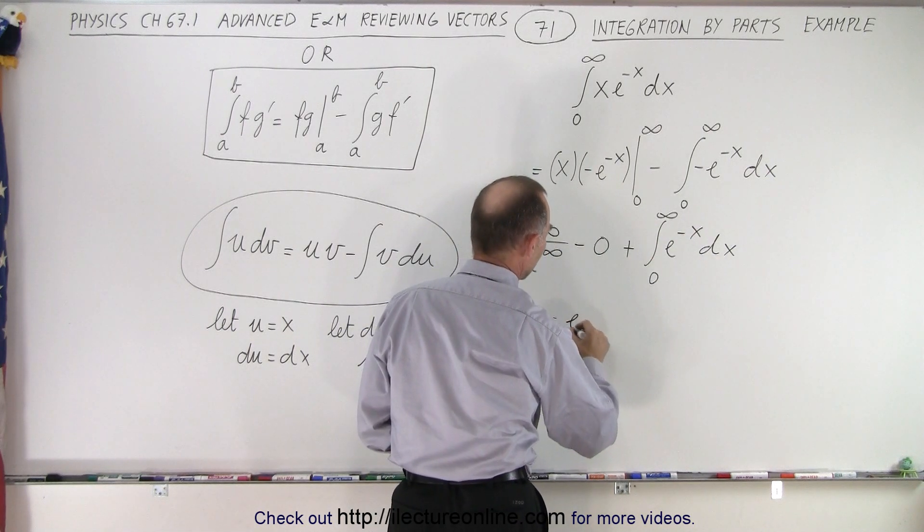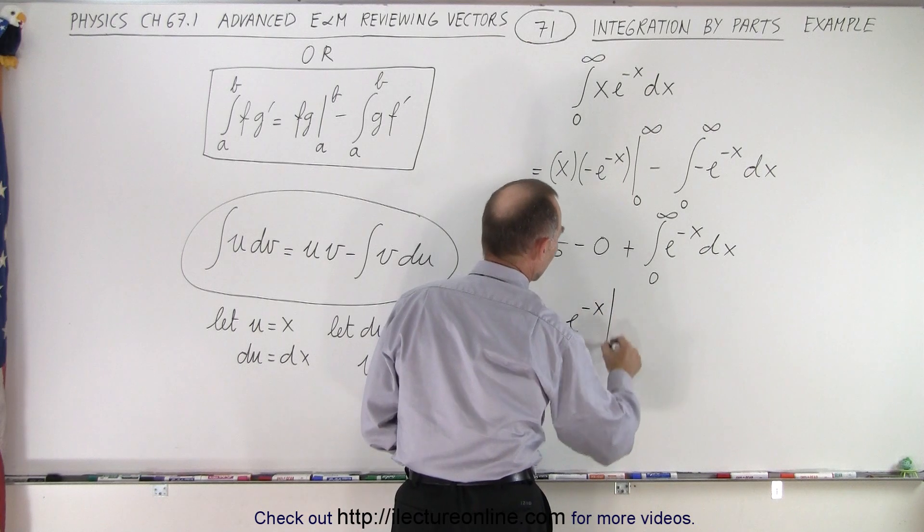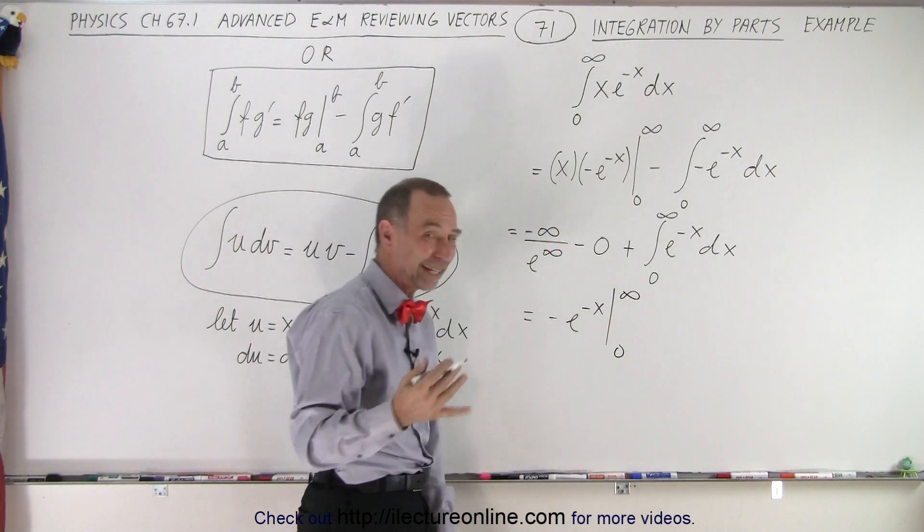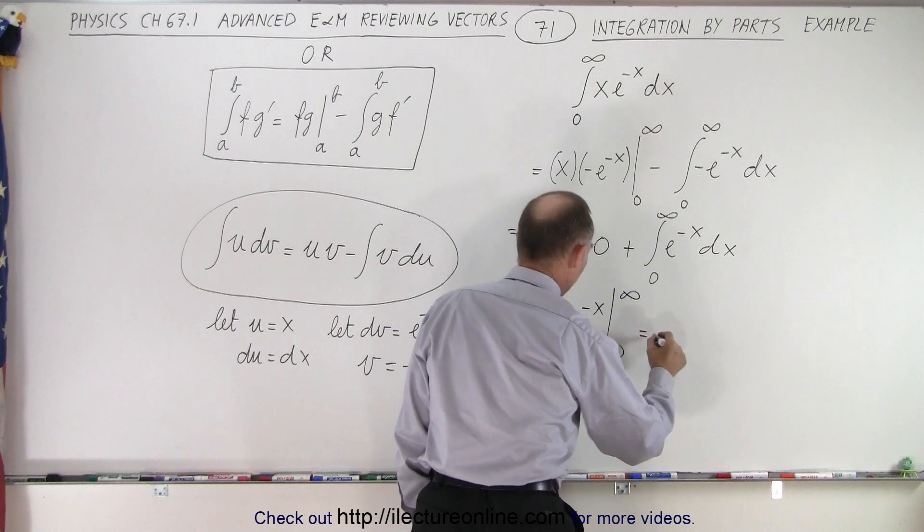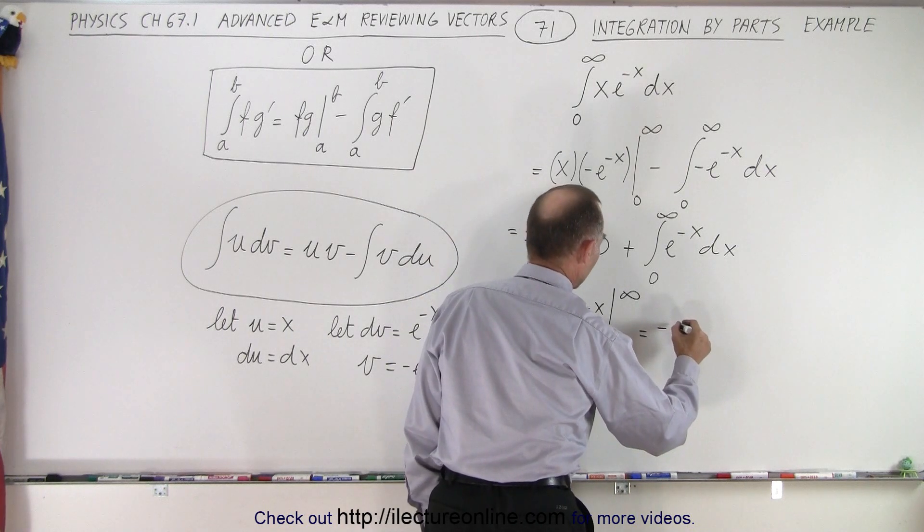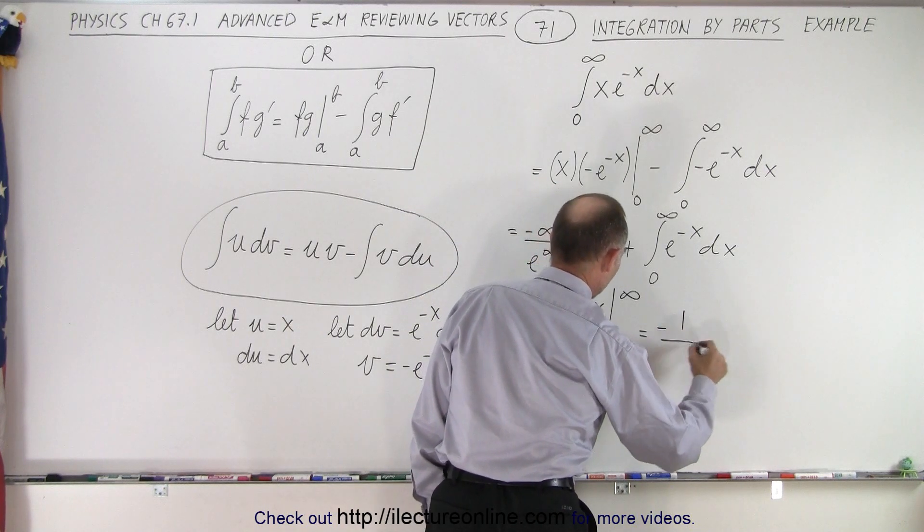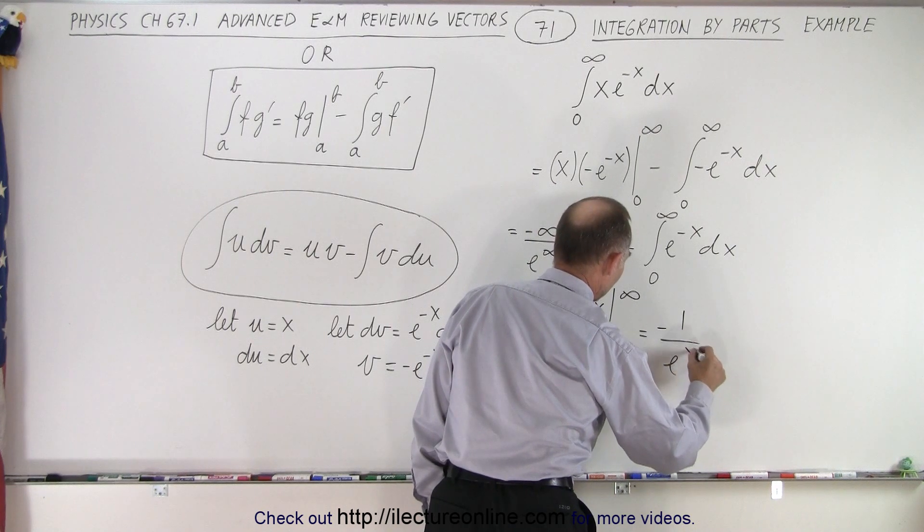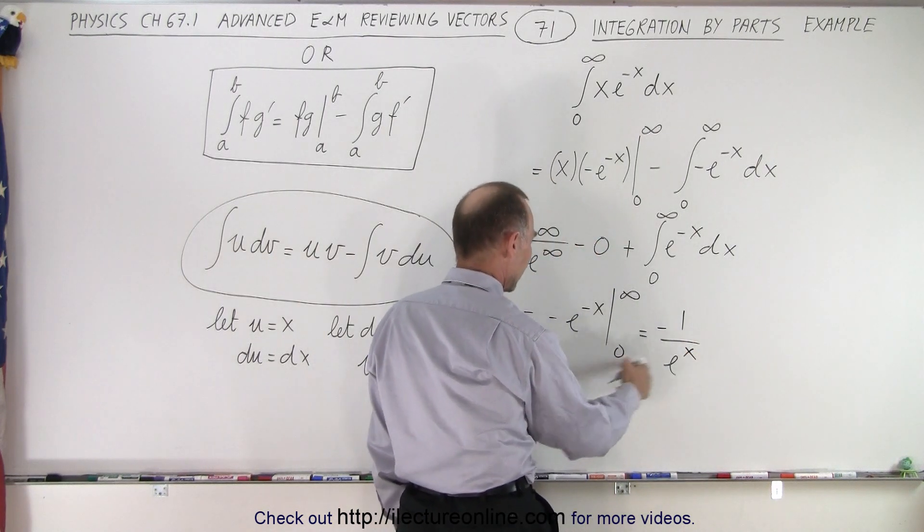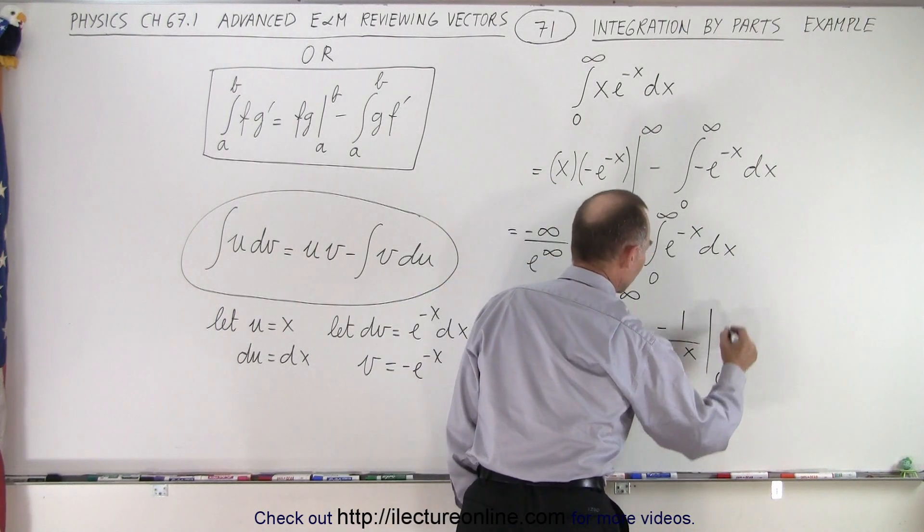which is equal to minus e to the minus x, evaluated from 0 to infinity. So here we do a similar kind of thing. So when we plug in the upper limit, we get minus 1 over e to the x. Let me write it like this first. So I'll bring it down with a positive exponent from 0 to infinity.